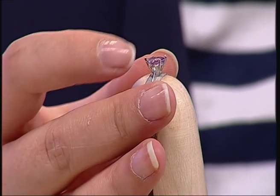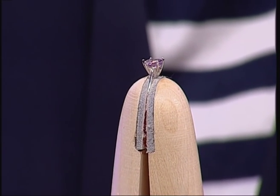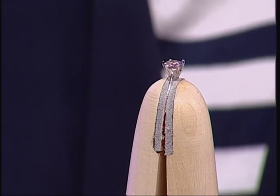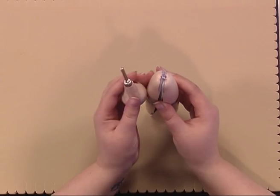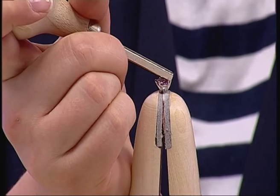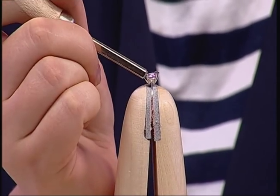Just literally place the stone into the setting and you see this one sits in quite nicely. If you do find the stone isn't quite flush you can use your pusher and you can just ease out these claws gently until the stone sits nicely within the setting.